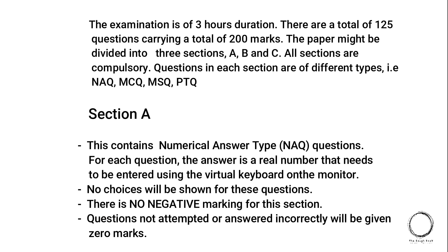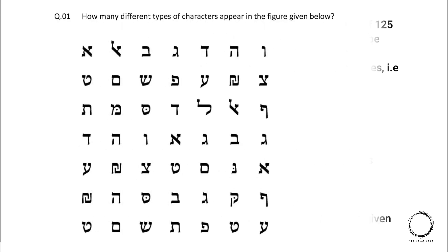So this is how the NAQ type might be. It might have options or not. It might have negative marking or not. So you need to check it at the start of the question paper. Okay, so let's start with the first question.